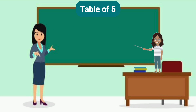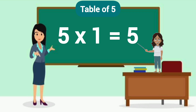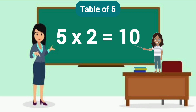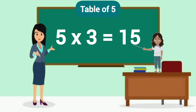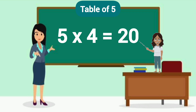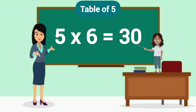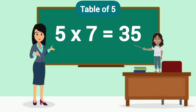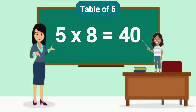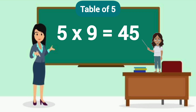Table of 5: 5×1=5, 5×2=10, 5×3=15, 5×4=20, 5×5=25, 5×6=30, 5×7=35, 5×8=40, 5×9=45, 5×10=50.